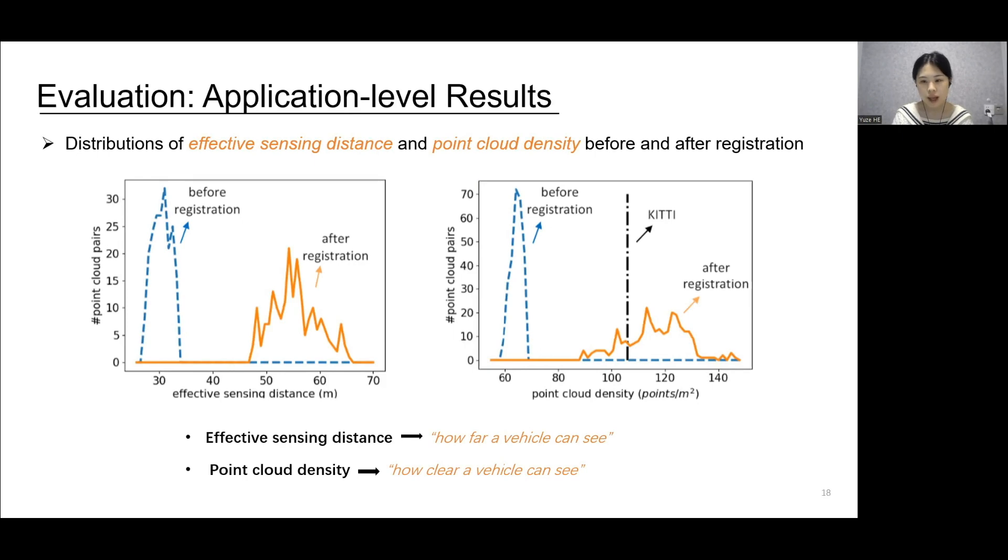It reflects how clear a vehicle can see. The left figure shows that our approach significantly improves vehicle's effective sensing distance from around 30 meters to around 50 to 60 meters.